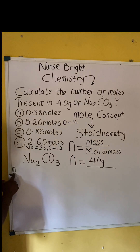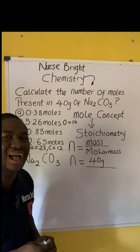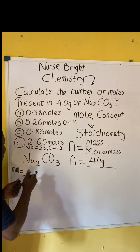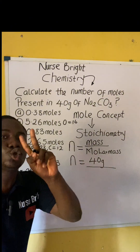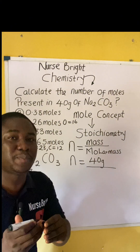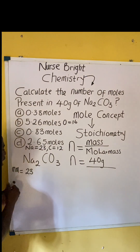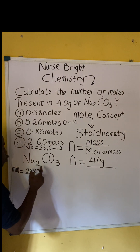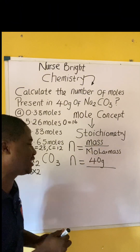For molar mass, I'm going to use MM. The atomic mass of sodium is 23. Since we have two sodiums — specifically two atoms of sodium — we multiply by two. So we have 23 times 2, and we are adding these atomic masses.